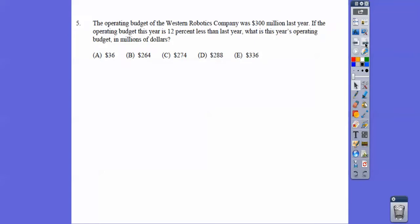The operating budget of the Western Robotics Company was $300 million last year. If the operating budget this year is 12% less than last year, that means it's going to be 88%. What's the year's operating budget? So 88% of 300 is 264, so we get choice B on that one.